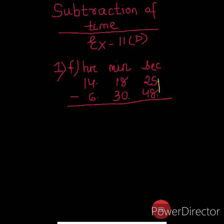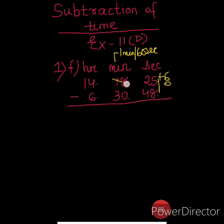We will borrow 1 minute, or we can save 60 seconds from it, and it will be added to 25. So 25 plus 60. As we have taken 1 minute from the minute group, 18 will become 17. Let's first write down the seconds group: 25 plus 60 is 85.